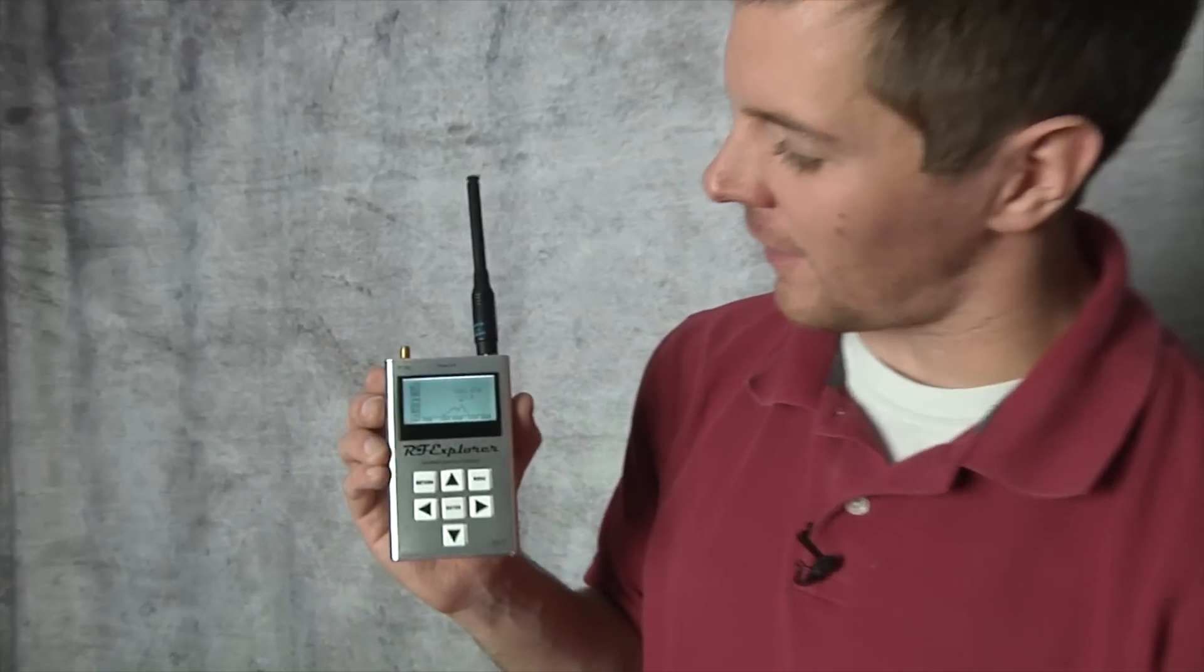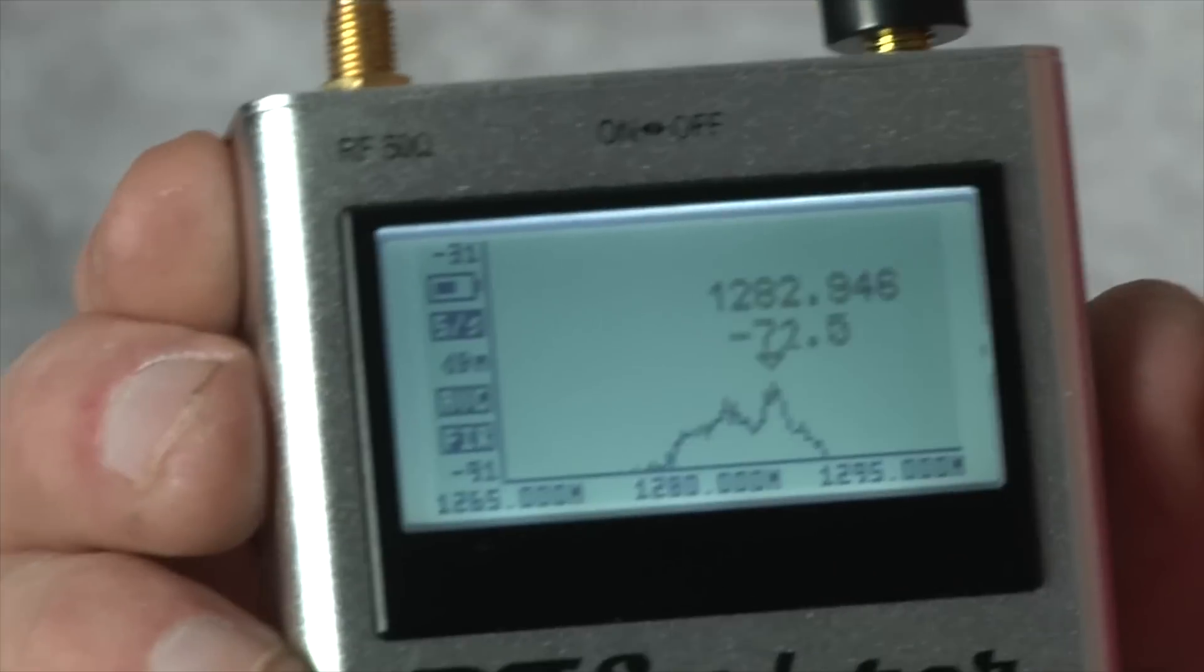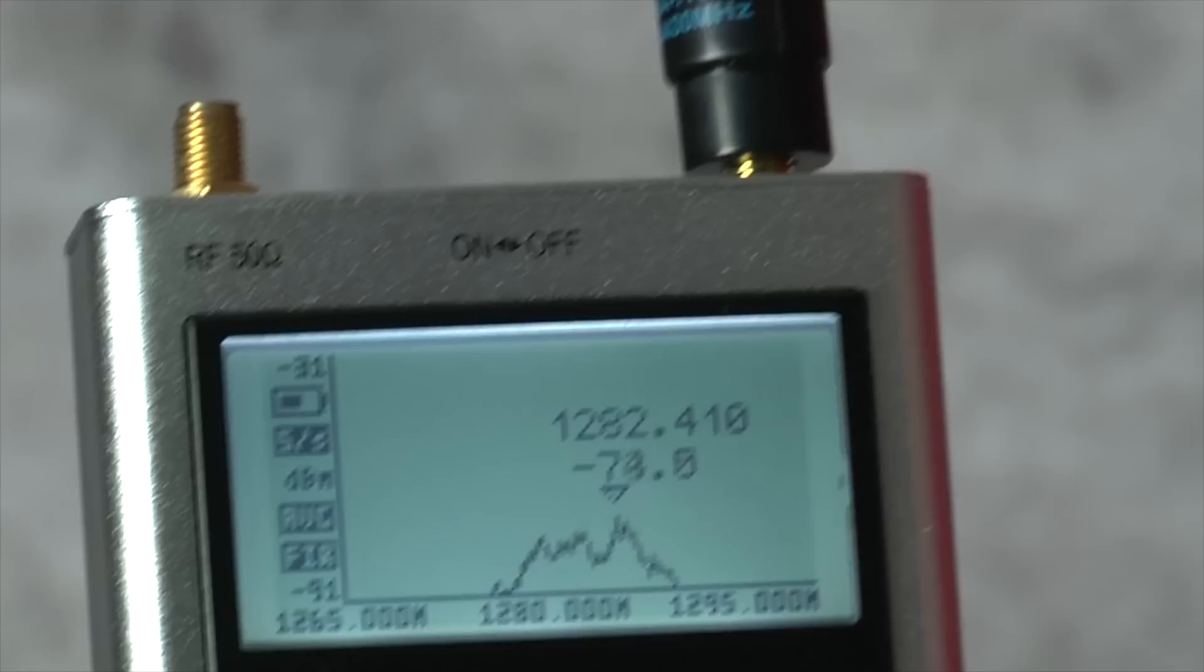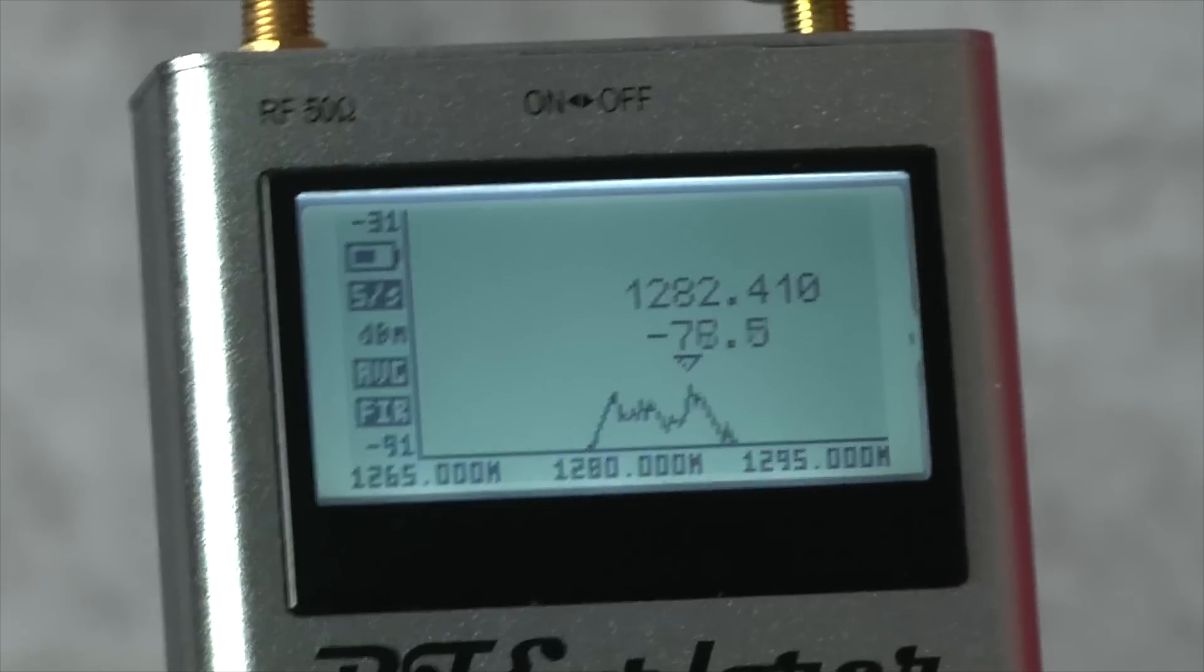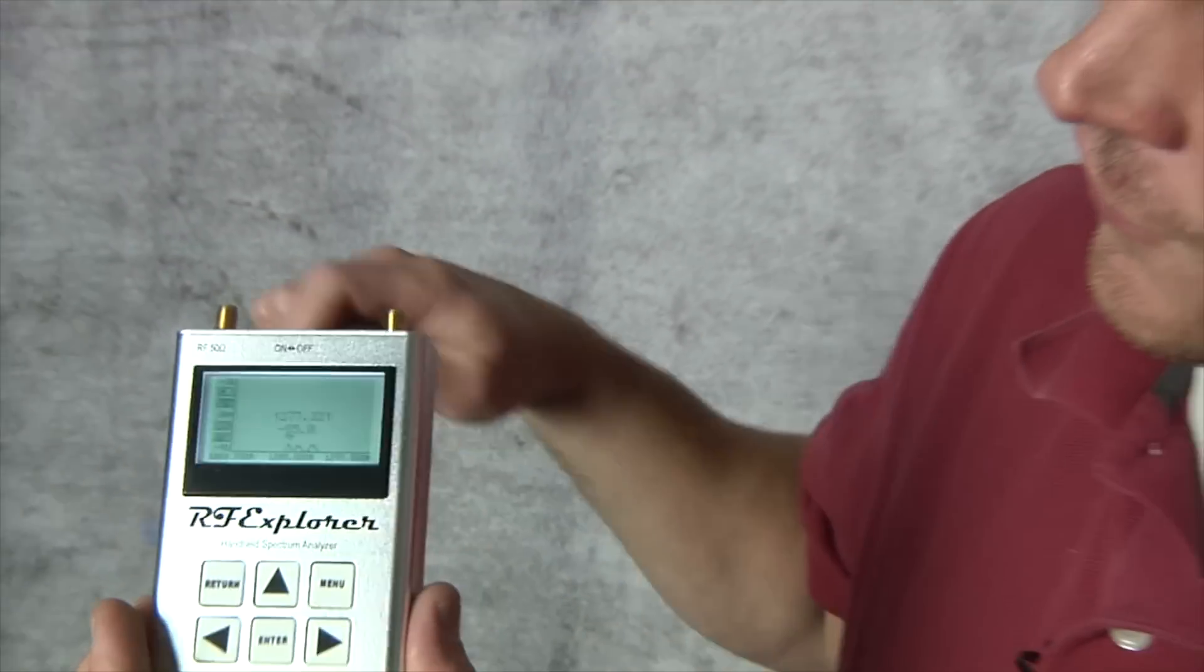So here's my spectrum analyzer showing a 1.3 gigahertz signal and I want to get rid of that. So what I'm going to do is I'm simply going to take my notch filter here.